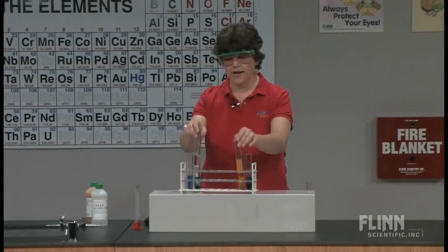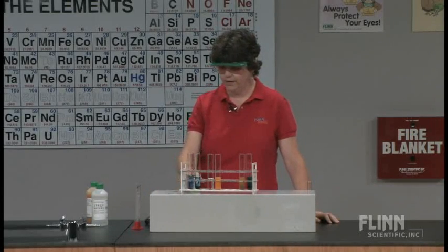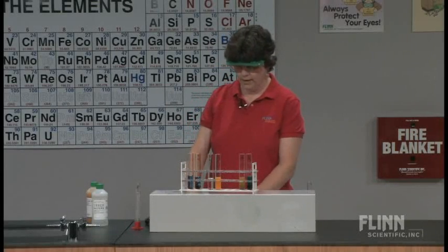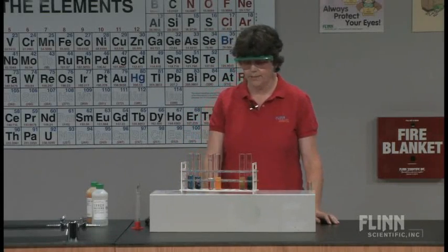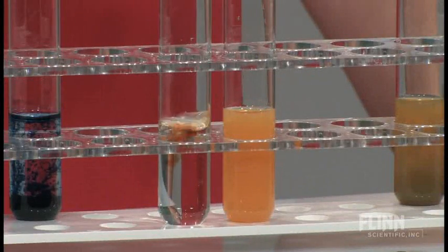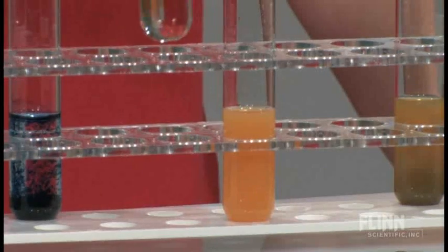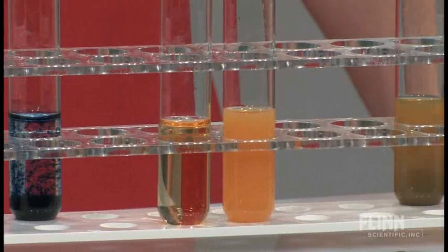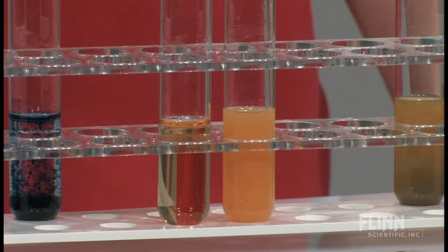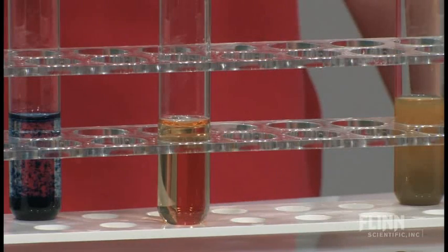Now another test we can do to see which iron ions we have is to use a thiocyanide. So I have here potassium thiocyanide. And if I put the potassium thiocyanide with the colorless Fe two plus, we're going to get, oh maybe a little bit of orange. A little bit of oxidation of the two plus to a three plus. But when I put the thiocyanide with the three plus ion, I get that classic blood red color of iron thiocyanide.